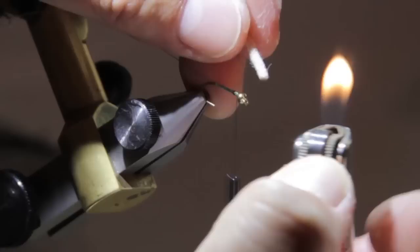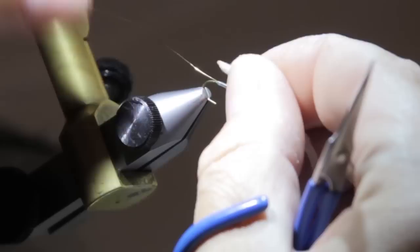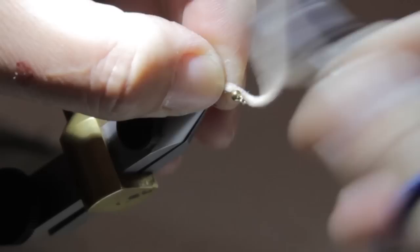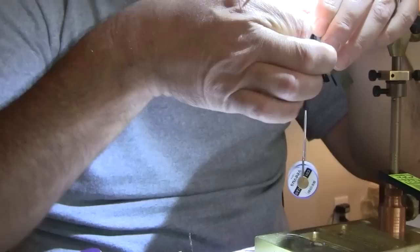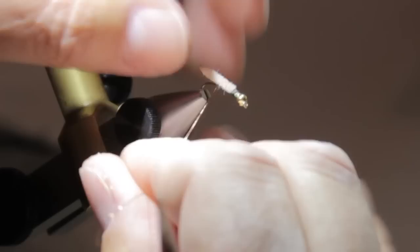I'm going to take some Ultra Chenille. All you do is take the blue part of the flame and just come in to create the taper. So I got the back part of the body tapered. I'm going to get it so it just goes beyond the bend of the hook. Tie this in. You can clip it first and then tie it in. I'm just going to do it this way for ease.